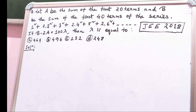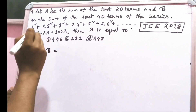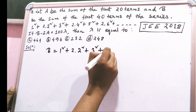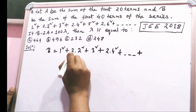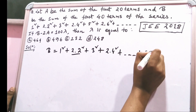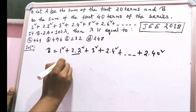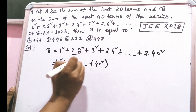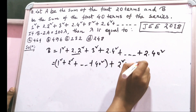To find B, the 40-term series is: 1² + 2·2² + 3² + 2·4² + ... + 2·40². Every even-positioned term is multiplied by 2. We break this as: (1² + 2² + ... + 40²) + (2² + 4² + ... + 40²).